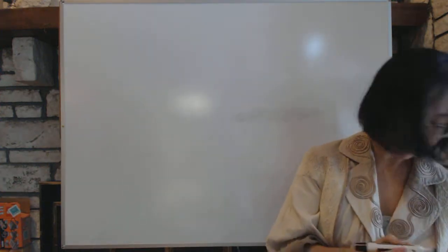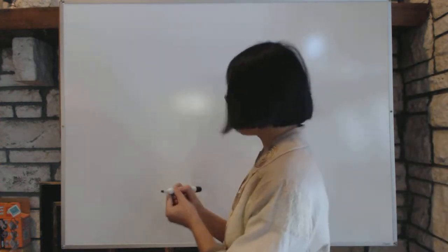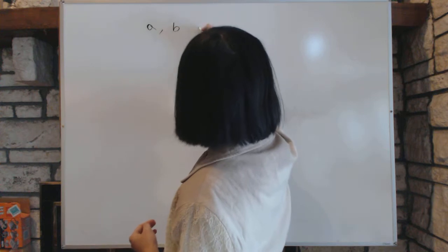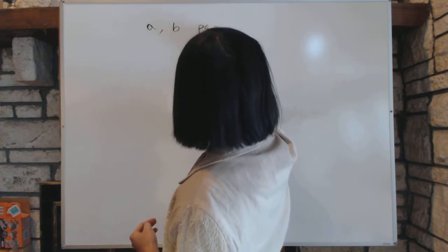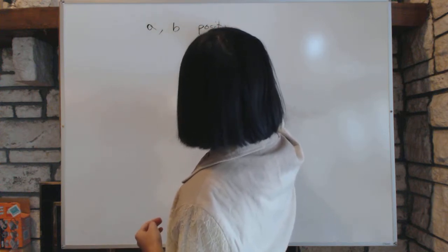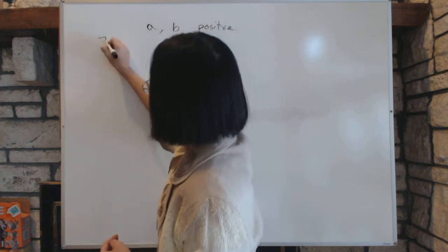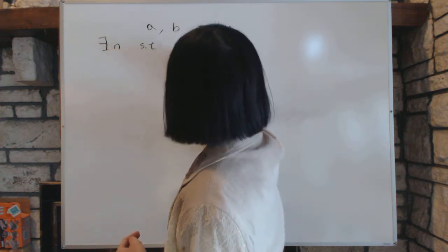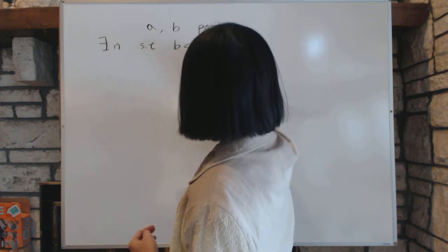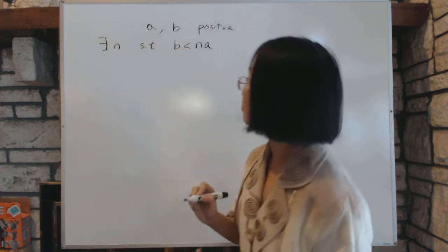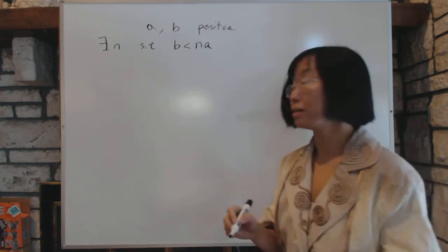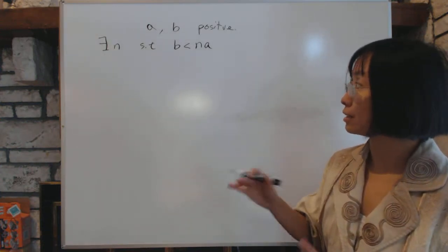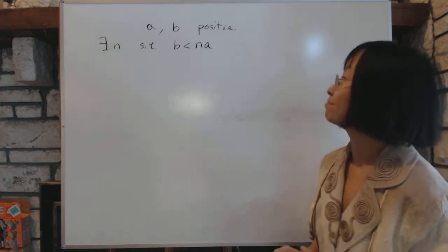Let A and B be positive real numbers. Then there exists a natural number N such that B is less than NA. In other words, it doesn't matter how small A might be, you can pick a big enough N such that N times A is going to be bigger than B.